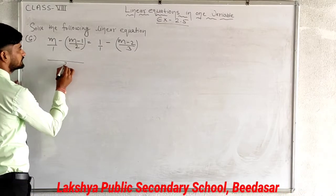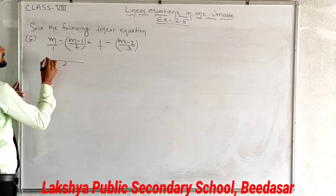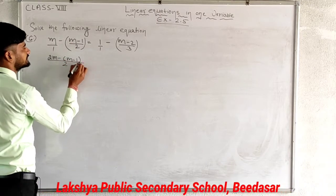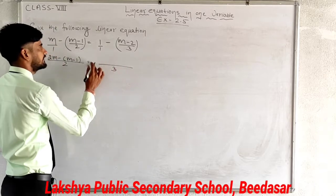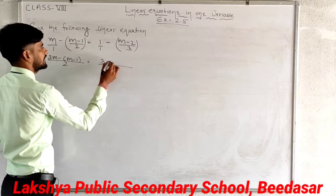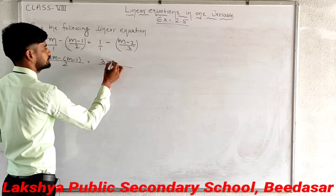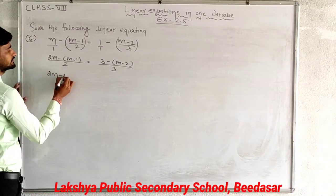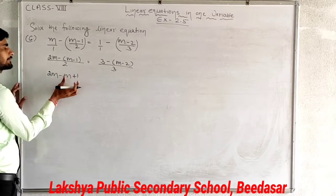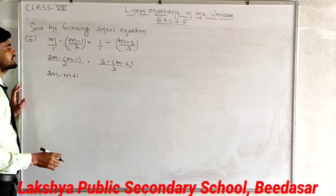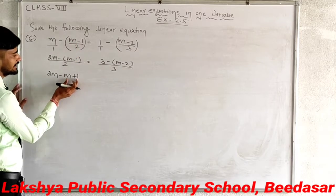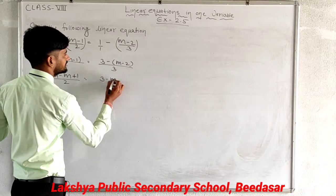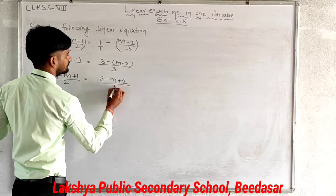Take LCM of 2 and 1, which is 2. So 2 divided by 1 is 2, multiply m gives 2m; minus 2 divided by 2 is 1, multiply (m minus 1) — same: (m minus 1). On the right, LCM of 3 and 1 is 3: 3 divided by 1 is 3, multiply 1 gives 3; minus 3 divided by 3 is 1, multiply (m minus 2) — same: (m minus 2). Note the minus-minus becomes plus, which is why your answer would be wrong without brackets.